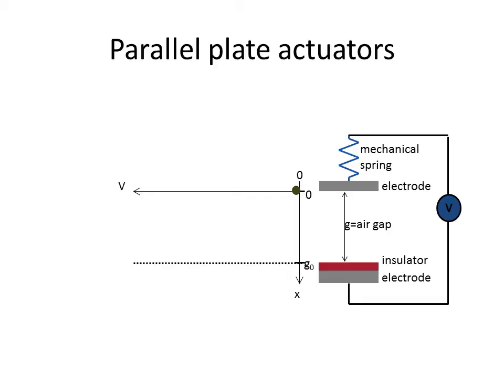So here you can see it typically consists of two electrodes, of which one is fixed and the other is movable.